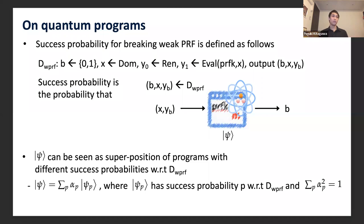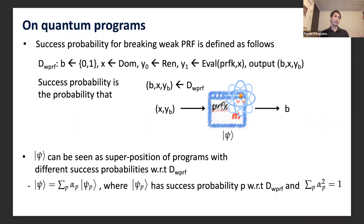A quantum program ψ can be seen as a superposition of many quantum programs with different success probabilities with respect to D_wprf. In other words, we can decompose ψ with respect to D_wprf. More concretely, we can write ψ as a superposition Σ_p α_p |ψ_p⟩, where ψ_p is a quantum program with success probability p and Σ_p |α_p|² = 1.